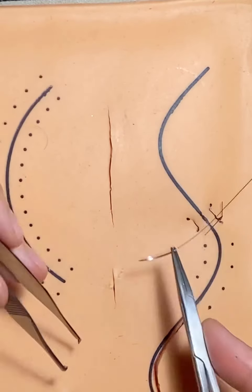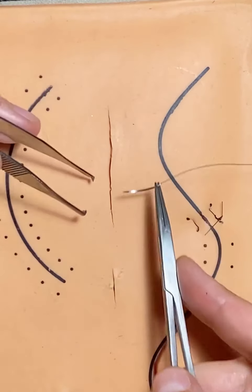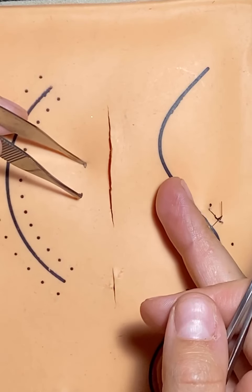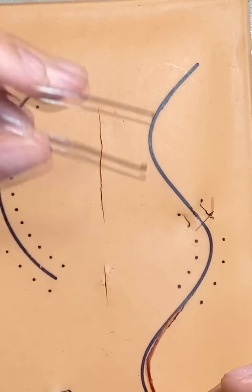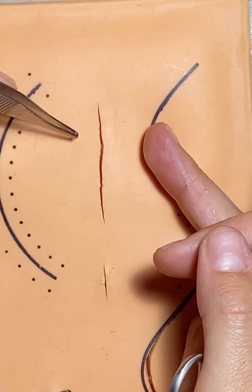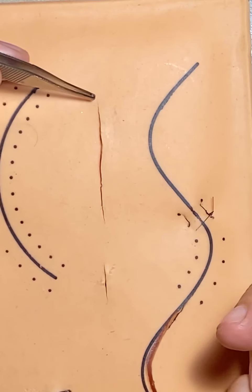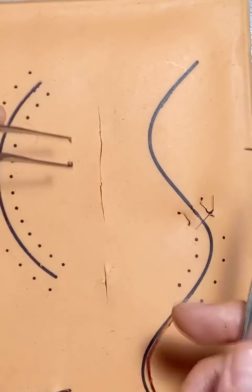You can do this over simple interrupted stitches, or you can use this if you have a long incision and you're trying to save time. It also helps in some indications to decrease tension over the wound because it's spread out along one big stitch.